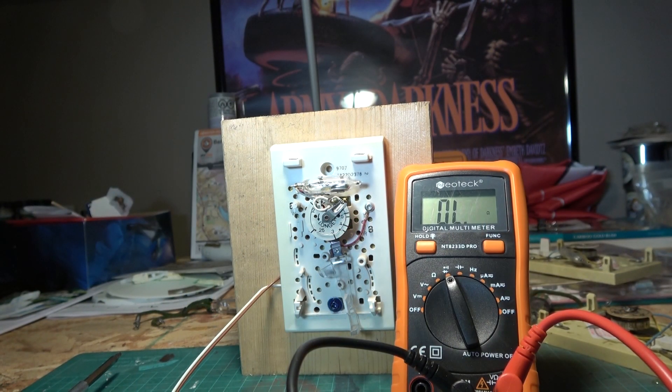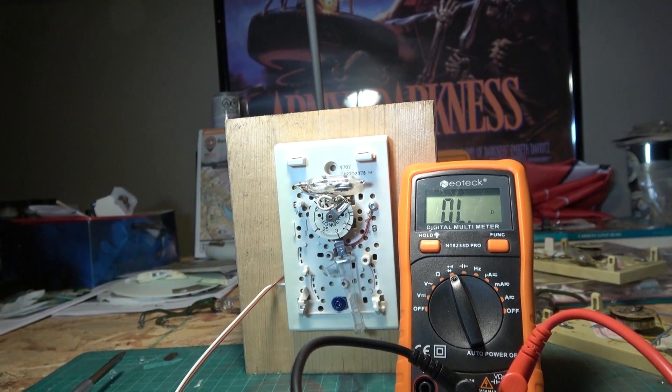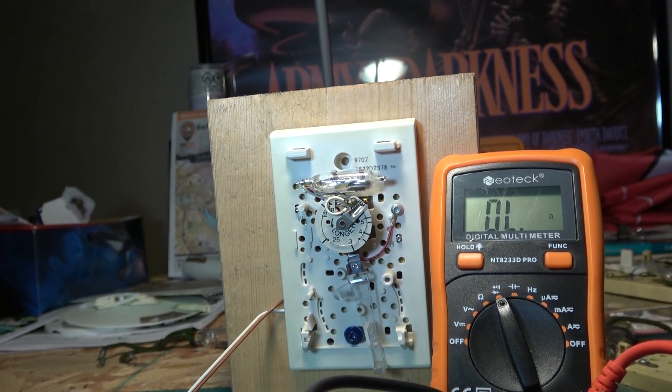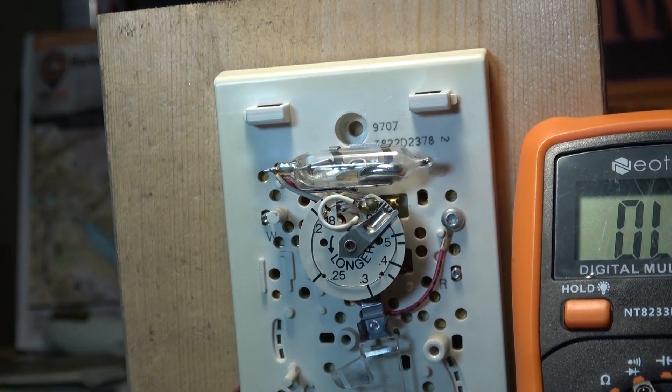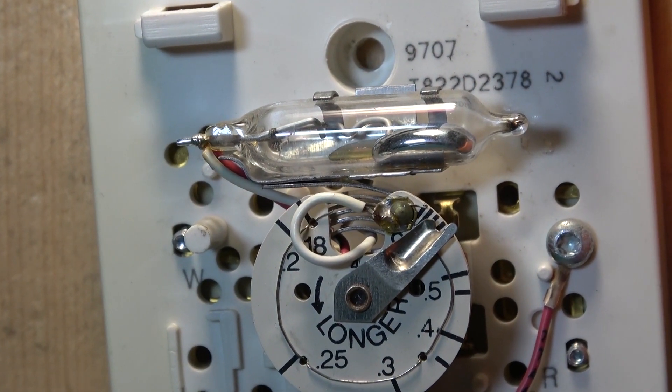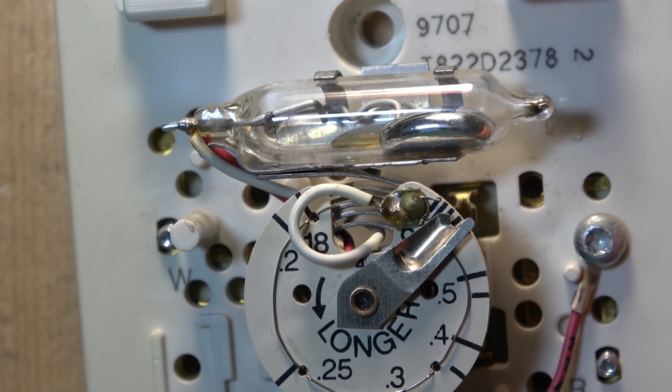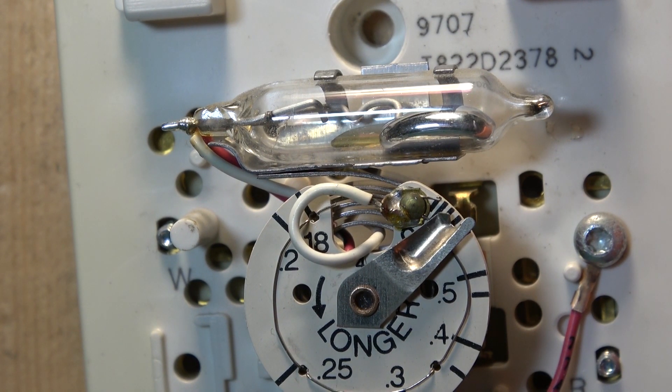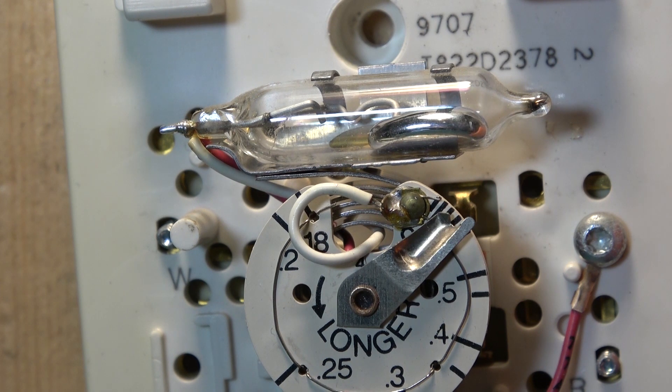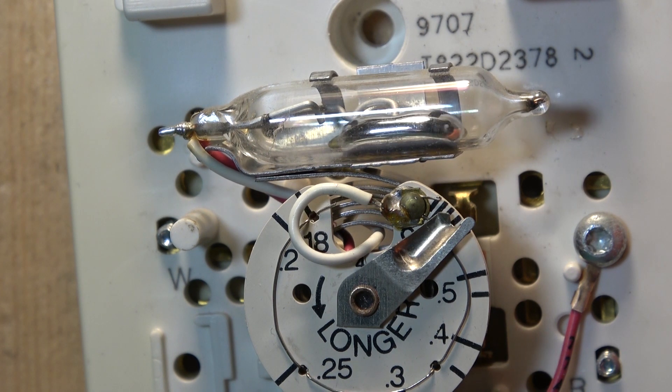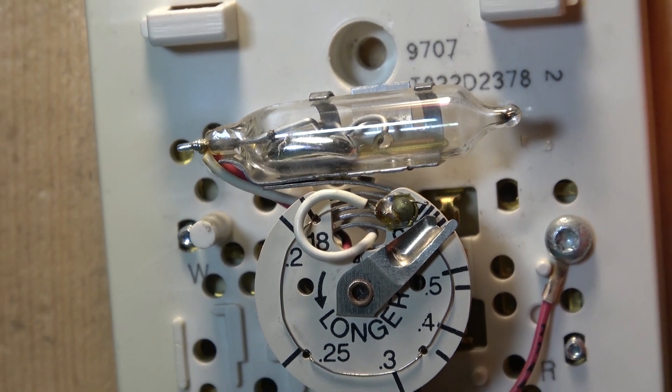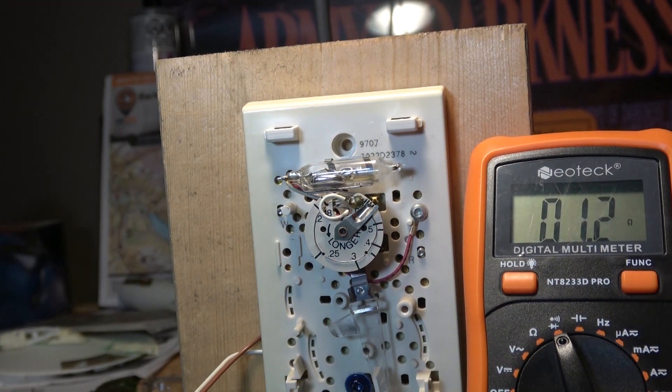I have my multimeter set up for continuity and I have it hooked up to the leads so we should see a call for heat here as soon as it cools off a little bit. I brought an ice pack here with me. I'm just gonna gently blow over the ice pack and onto the bi-metal coil and we should see the mercury make contact and you'll hear a sound. There you have it.